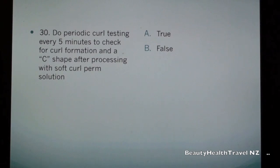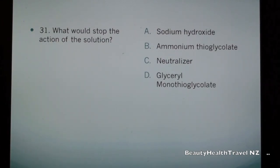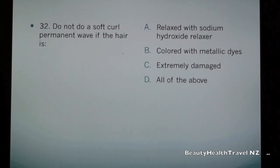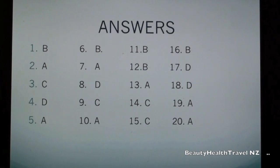Question 31: What would stop the action of the solution? a) sodium hydroxide, b) ammonium glycerin dioglycolate, c) neutralizer, d) glycerin monodoglycolate. Question 32: Do not do a soft curl permanent wave if the hair is: a) relaxed with sodium hydroxide relaxer, b) colored with metallic dyes, c) extremely damaged, d) all of the above.